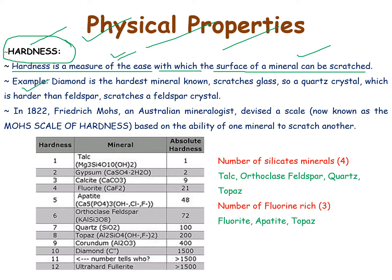For example, diamond is the hardest mineral and it can scratch glass. A quartz crystal, which is much harder than feldspar, can scratch a feldspar crystal. So the more hardness, the stronger the mineral; the less hardness, the less strong it is. This is the concept you should know behind this.